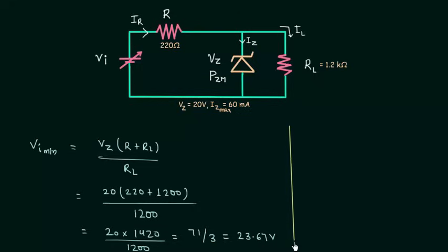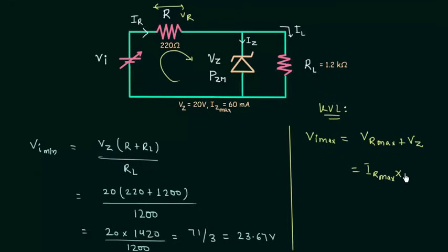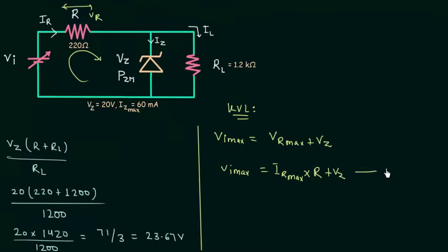Now we will calculate the maximum value of input voltage VI max. VI max is equal to VR max, voltage across the series resistance, plus VZ. And I have obtained this equation by using the KVL, Kirchhoff's voltage law in this loop. VR maximum is equal to IR maximum multiplied by R plus VZ and this is equal to VI max. I will call this equation number 1 and we have to calculate IR max.